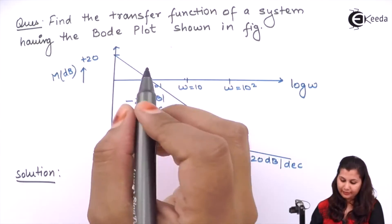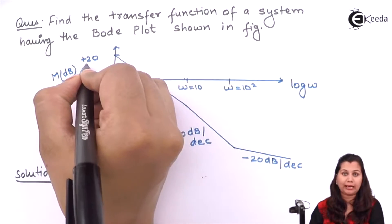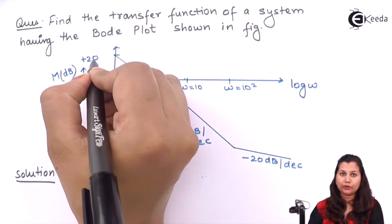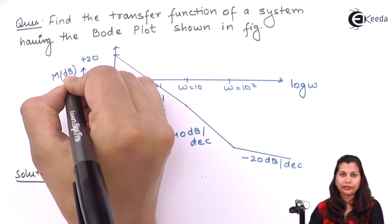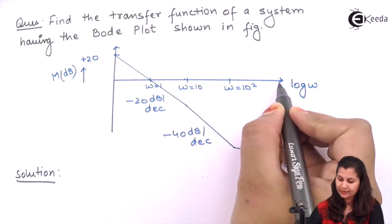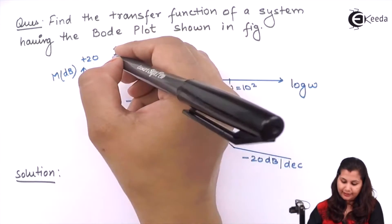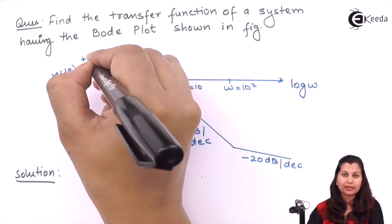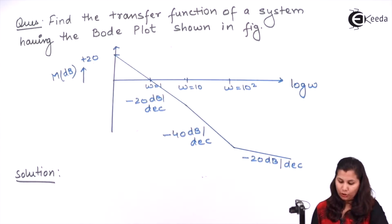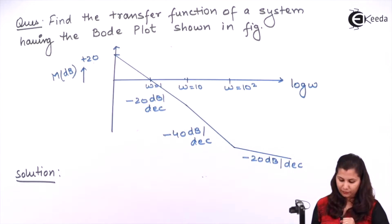Now if you can see, this Bode plot is starting from the point which is having the magnitude as plus 20 dBs. The y-axis is showing the magnitude in dBs and the x-axis is showing the frequency in radians per second. At this frequency, its magnitude is plus 20 dBs.